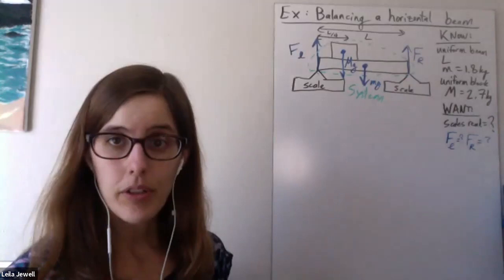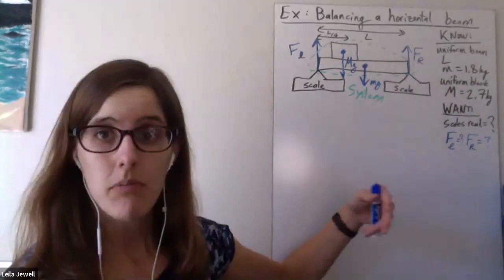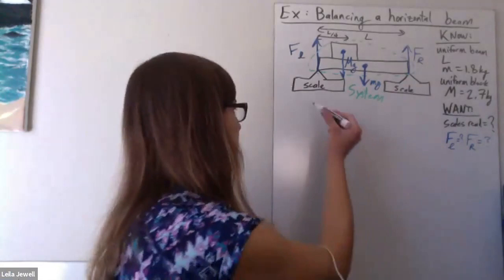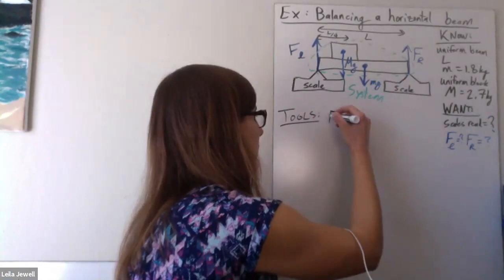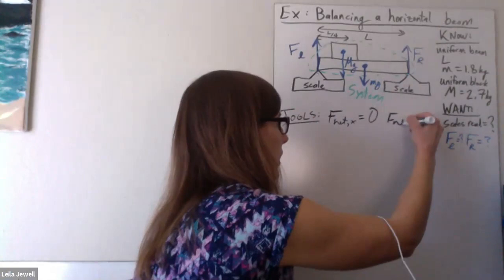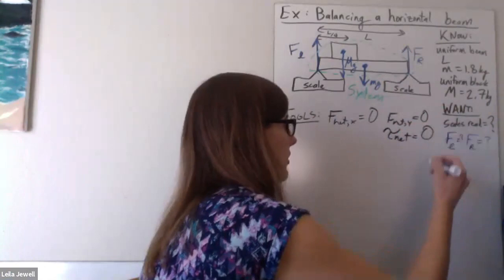We can also think about our tools. And because it's balanced, because nothing is tipping, we know that's in equilibrium. So that's what we want to think of with our tools that we have in all of these. F net in the x direction is equal to zero. F net in the y direction is equal to zero. And the net torque is equal to zero.